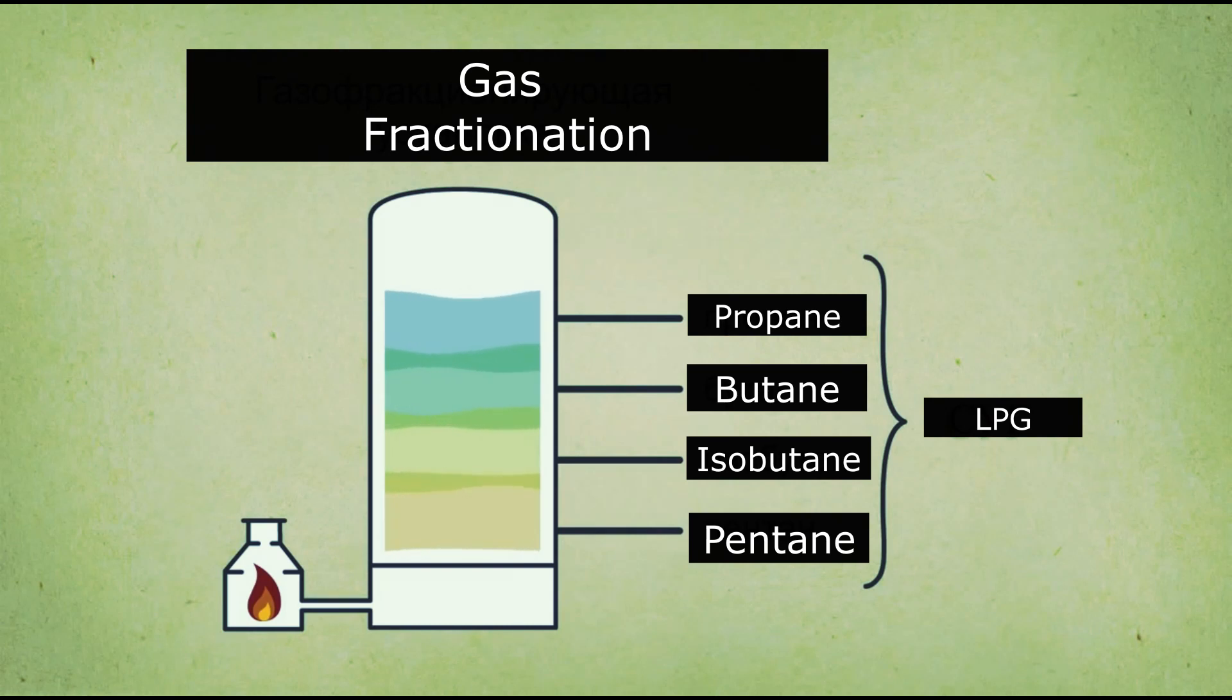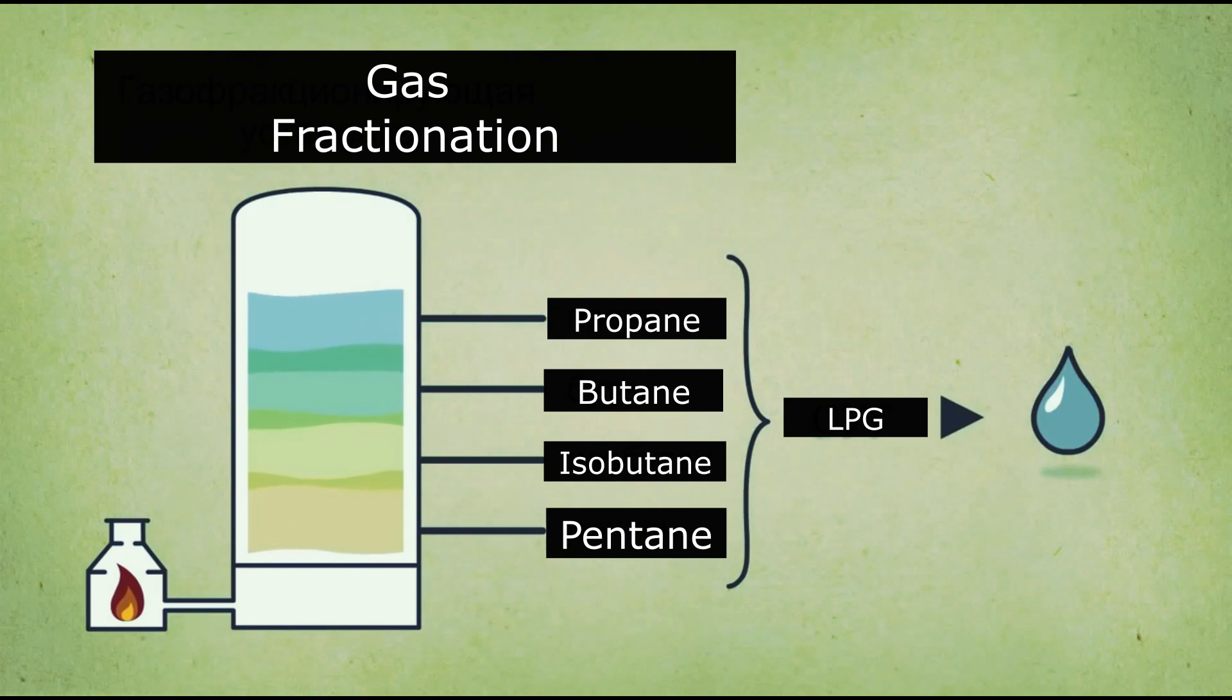The output is liquefied hydrocarbon gases or LPG, propane, butane, isobutane and others. Usually they are in a gaseous state, but for subsequent transportation they are turned into a liquid.